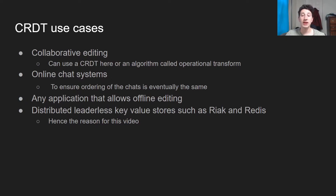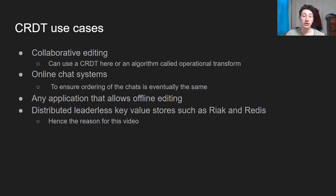There are also online chat systems, in terms of ensuring that the ordering of chats is eventually going to be the same amongst all users. There's also anything that involves offline editing, like a calendar app — eventually you'll have to sync those changes back into the database, so each offline client is kind of treated like its own database in a multi-leader replication setup. CRDTs are now used in a decent amount of distributed key-value stores, such as RIAK and Redis, and since I'll be talking about both in subsequent videos, I wanted to first cover CRDTs because they're a very important differentiator between these and something like Cassandra.